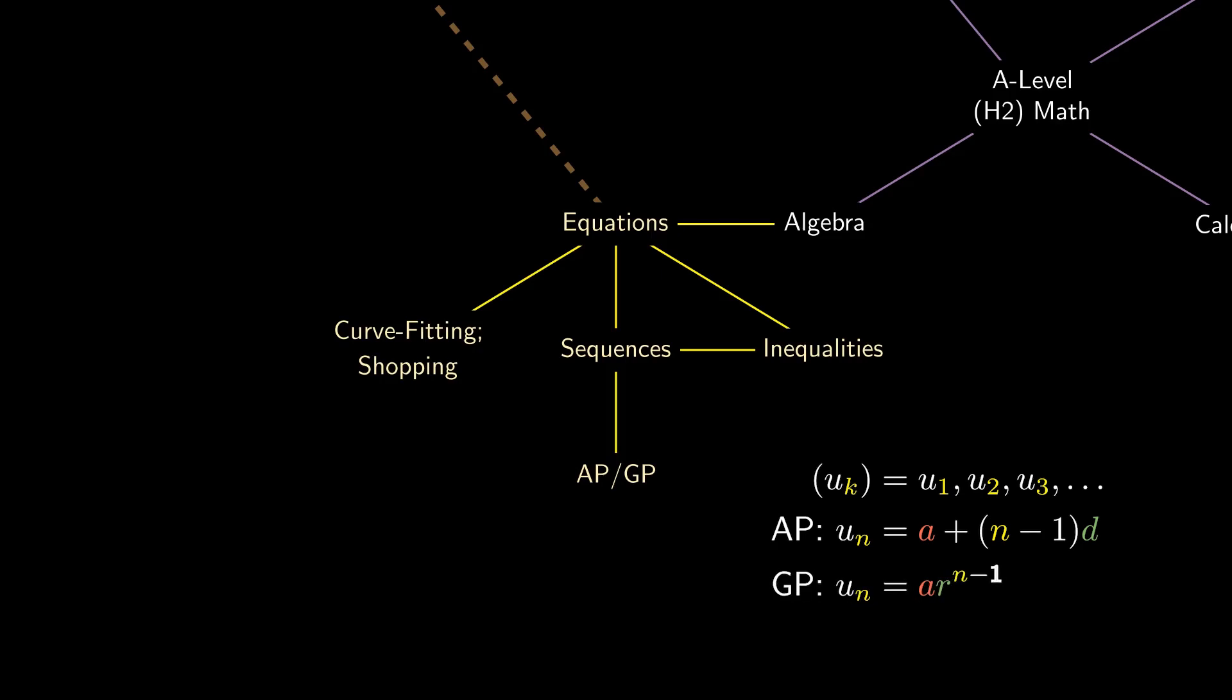as well as the geometric progression, where you start from the first term A, and instead of adding by a common difference D, you'll multiply by a common ratio R.